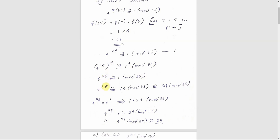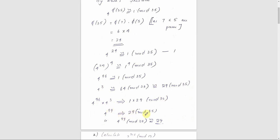Next we compute 4 raised to 3, which equals 64. Now 64 mod 35 gives remainder 29. So 4 raised to 99 equals 4 raised to 96 times 4 raised to 3, which is congruent to 1 times 29 mod 35. Therefore 4 raised to 99 is congruent to 29 mod 35.